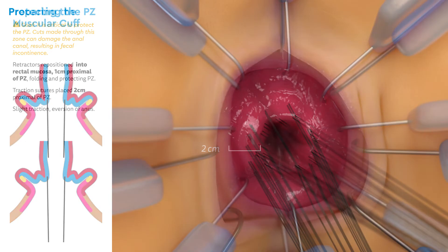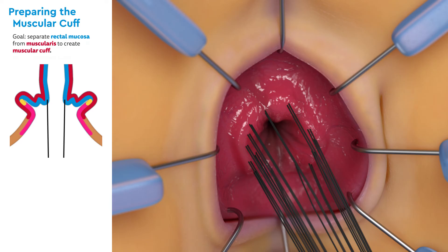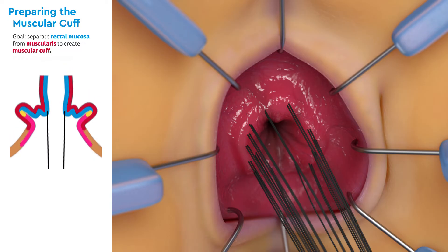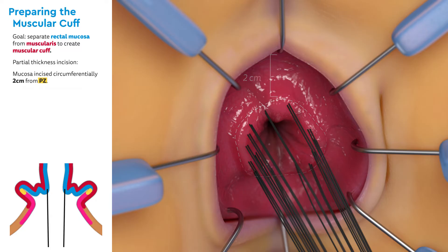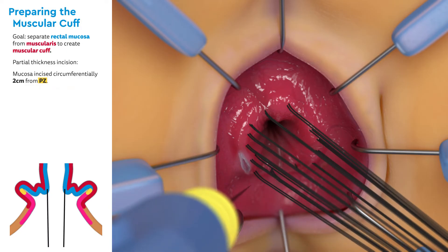Next, the muscular cuff will be created. The goal is to separate the rectal mucosa from the muscularis to create the muscular cuff. First, a partial thickness incision is made. The mucosa is incised circumferentially 2 cm from the pectinate zone, distal to the traction sutures. Care is taken to only dissect through the mucosa and not into the muscular layer to preserve the cuff.